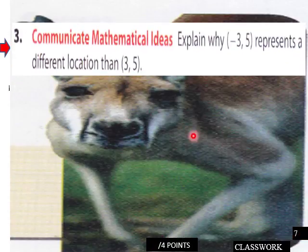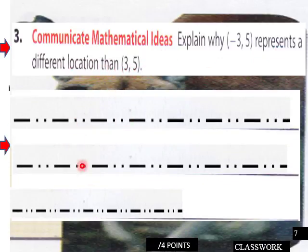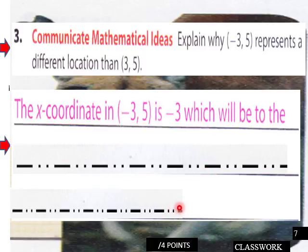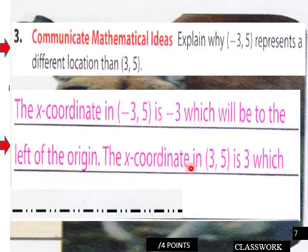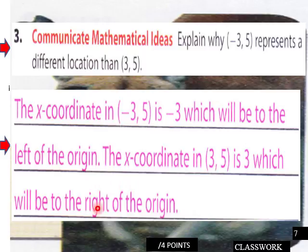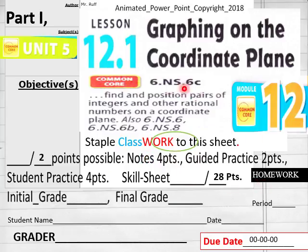Page seven of the classwork: communicate mathematical ideas — explain why negative three, five represents a different location than three, five. Teachers, give your students about two to three minutes to explain that in their own words. The x-coordinate in negative three, five is negative three, which is to the left of the origin; the x-coordinate in three, five is three, which is to the right. So they're in different quadrants. Here's our homework for 12.1 — 28 points.